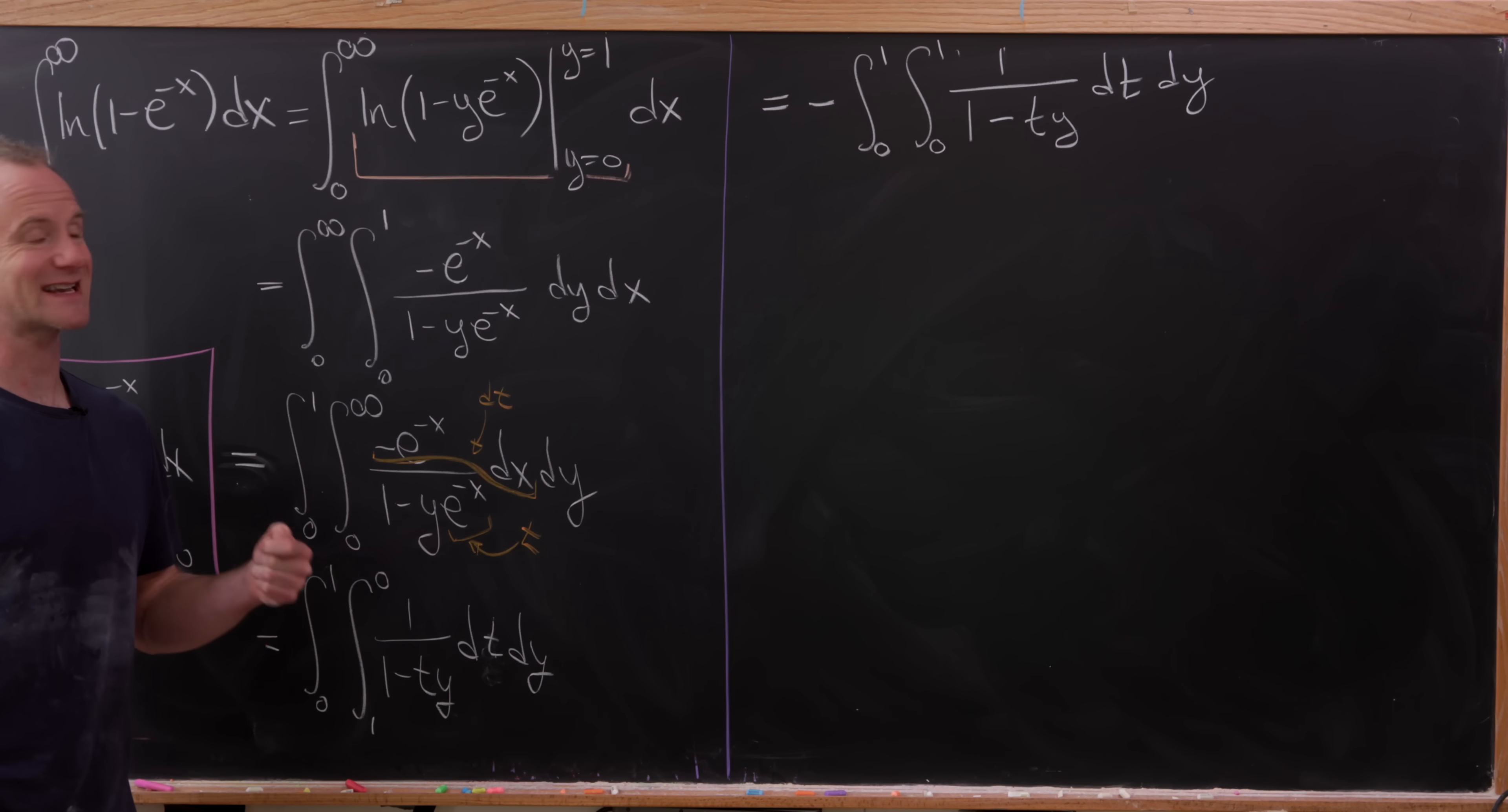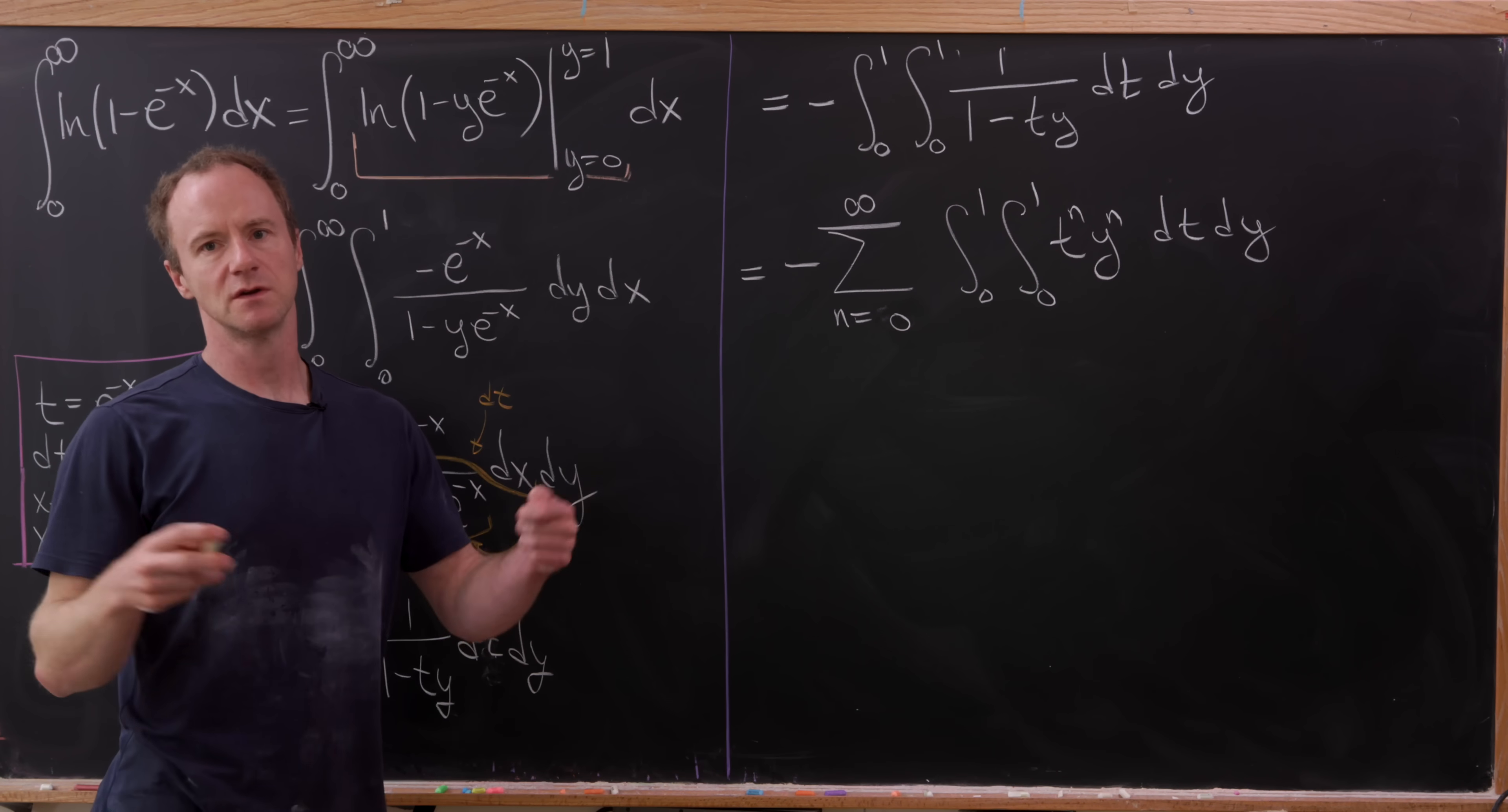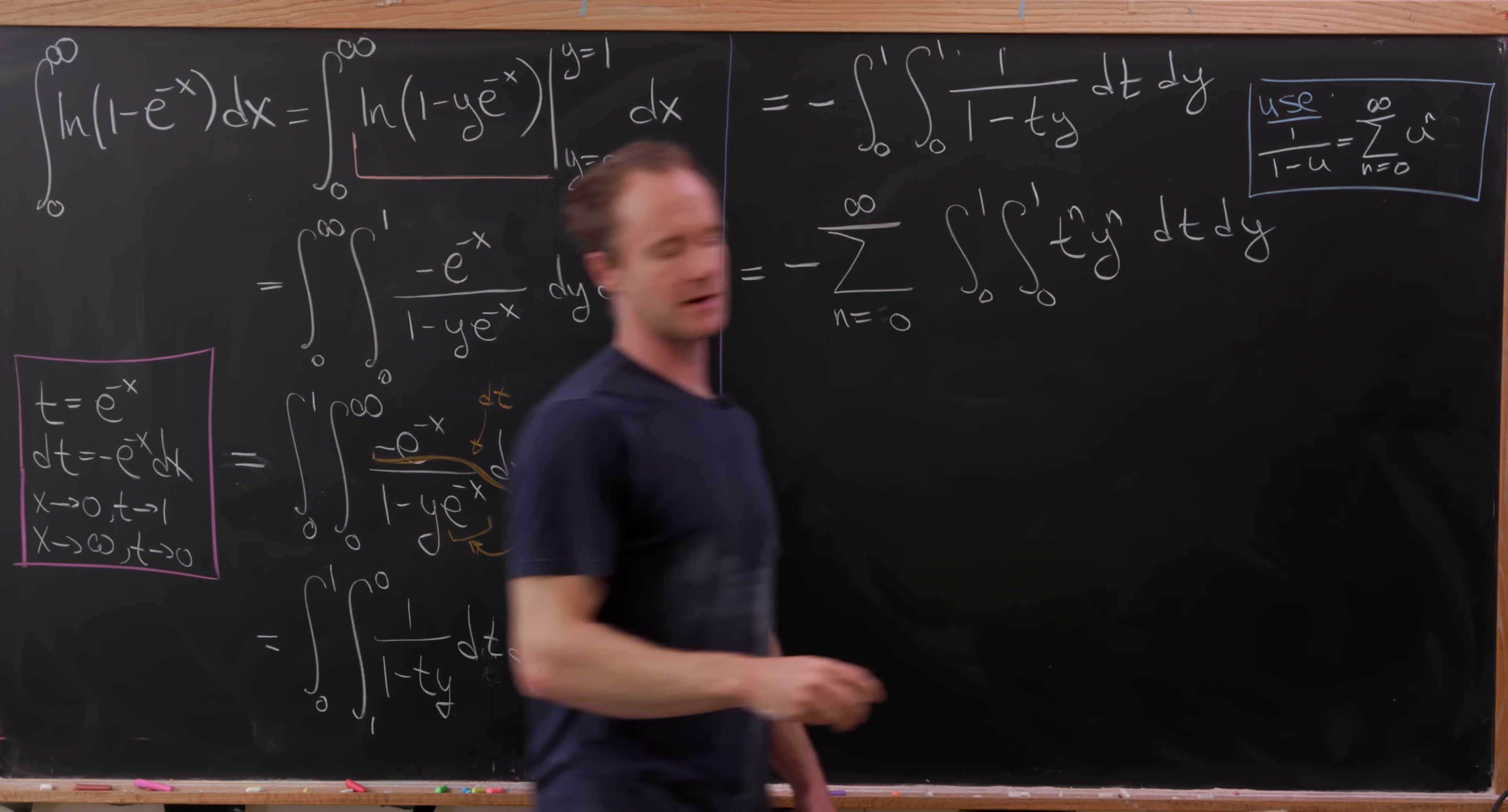At this stage, what we'll do is expand that denominator using a geometric series. So that's going to give us minus the sum as n goes from zero up to infinity, now we have the integral from zero to one, the integral from zero to one of t to the n times y to the n, and then dt dy. It's really t times y raised to the n power, but we can distribute that exponent through. We're using the fact that one over one minus u is the sum as n goes from zero to infinity of u to the n.